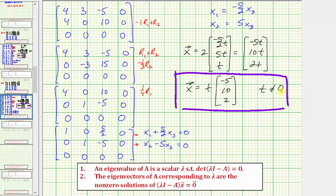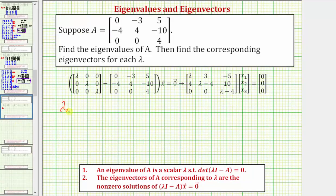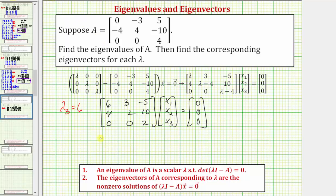Now we find the eigenvector for lambda sub three equals six. In our matrix equation, the first matrix has first row six, three, negative five; second row four, two, ten; third row zero, zero, two. The corresponding augmented matrix has first row six, three, negative five, zero; second row four, two, ten, zero; third row zero, zero, two, zero.